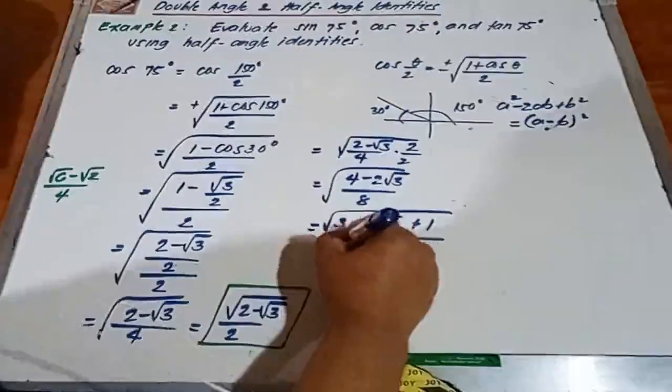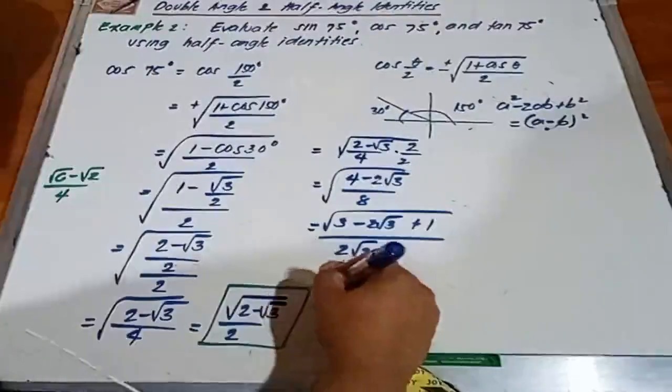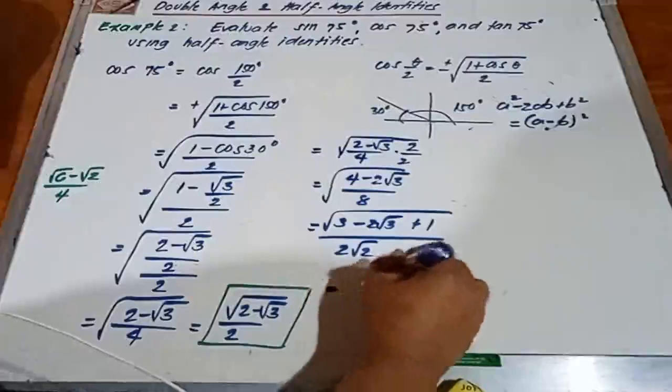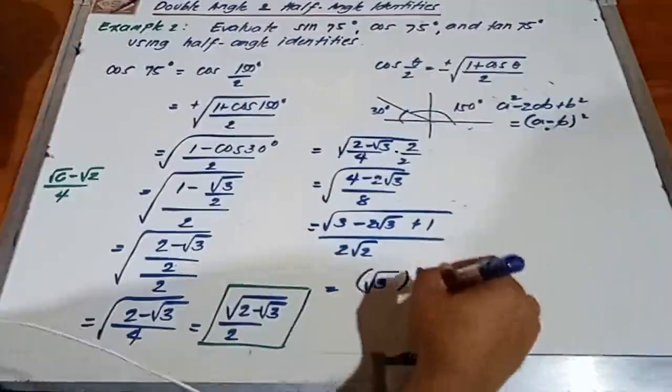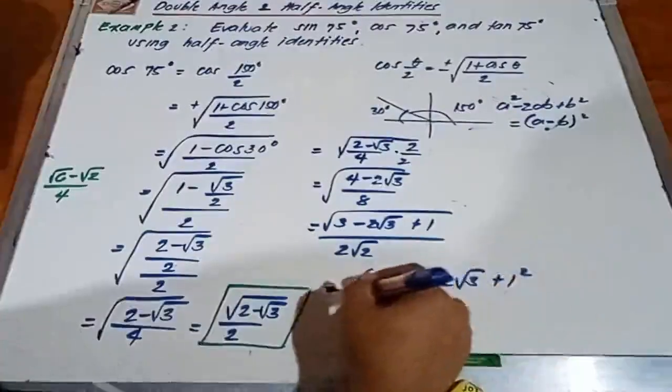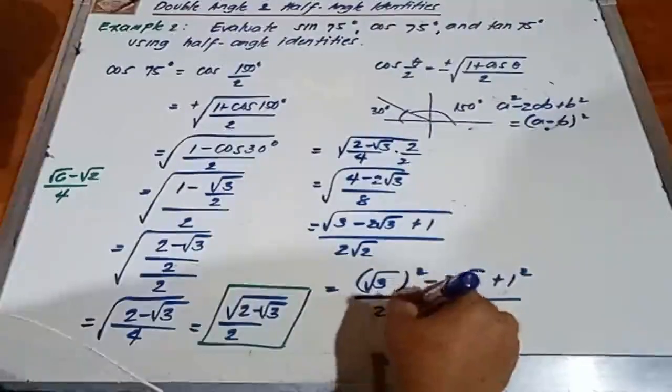That is 3 here minus 2 square root of 3 plus 1. And then, square root of 8 is 2 square root of 2. Next, rewrite natin ito. 3 is the same as square root of 3 squared, minus 2 square root of 3 and 1 is 1 squared, over 2 square root of 2.